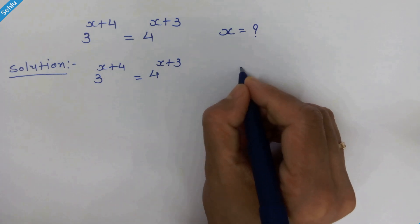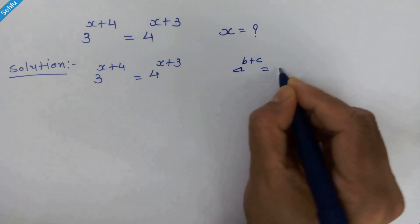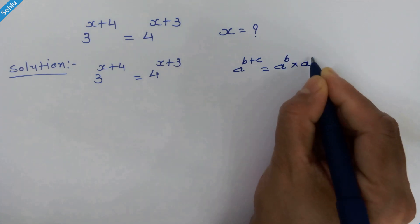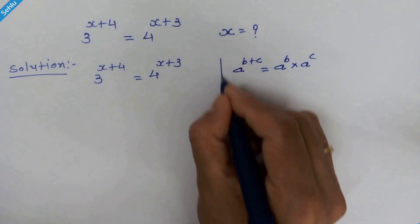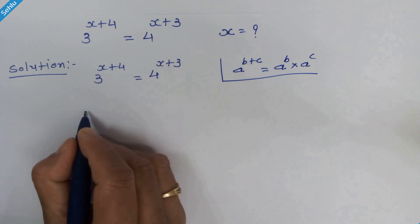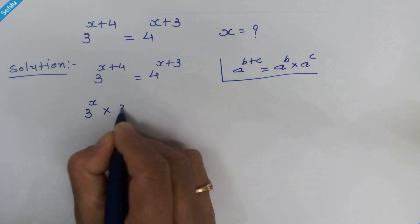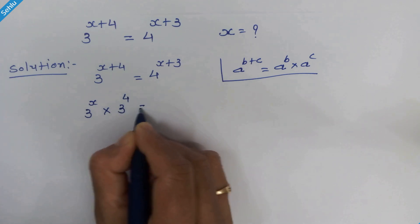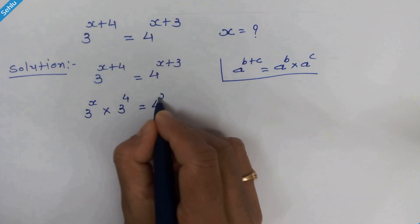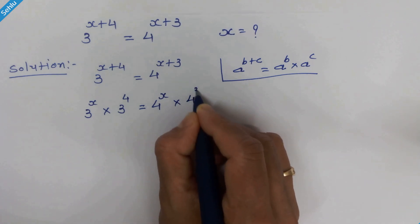Let's remind this rule: if we have a raised to b plus c, then it will be a raised to b times a raised to c. According to this rule, this part can be written as 3 raised to x times 3 raised to 4, is equal to 4 raised to x times 4 cubed.